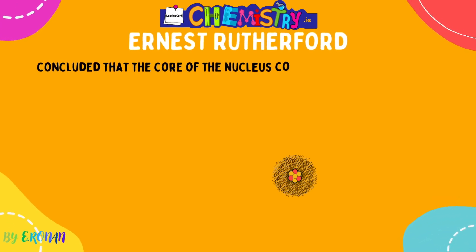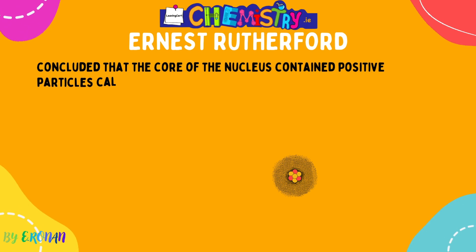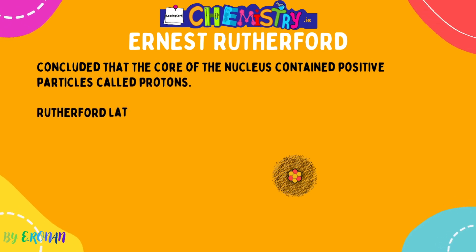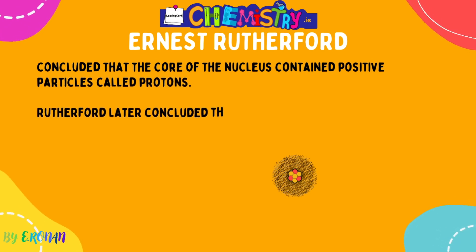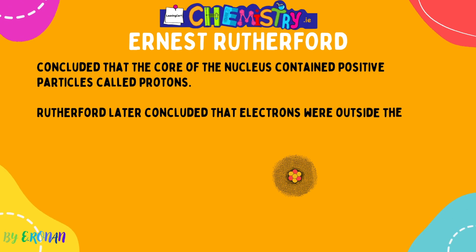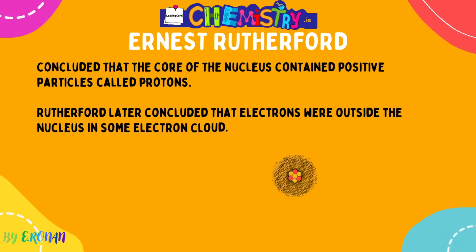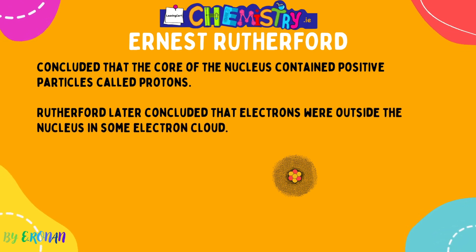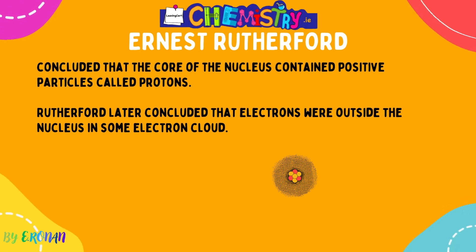Rutherford concluded that the core of the nucleus contained positive particles called protons. He later concluded that electrons were outside the nucleus in some sort of electron cloud, which you will revisit in the arrangement of electrons chapter.